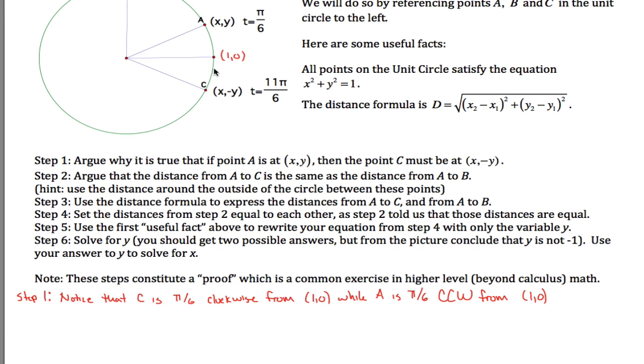So if it's the same distance around the outside, we can use the fact that because a circle is symmetric, C must have the same x coordinate as A but the negative of the y coordinate. Some argument similar to that, I don't really care how you argue it but as long as you get to that conclusion.